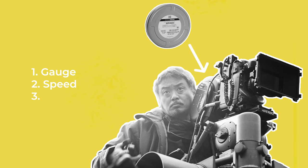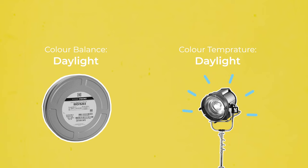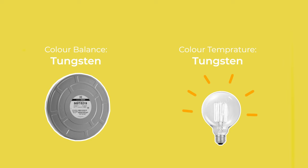Finally, films come in two colour balances: daylight and tungsten. This refers to the colour temperature of the light source that they are designed to be shot in. So when shooting under natural sunlight or with film lights like HMIs that have a colour temperature of approximately 5500 Kelvin, it's recommended to use a daylight stock. When shooting with warmer tungsten light sources, a tungsten-balance film should be used to get the correct colour balance.